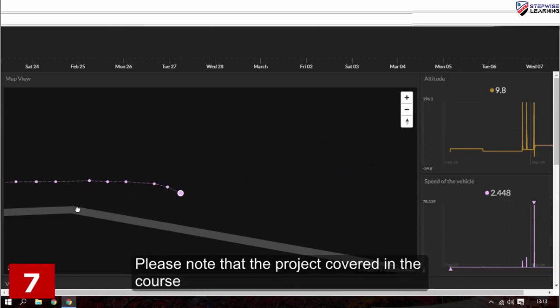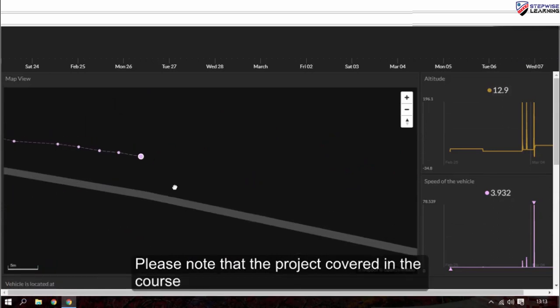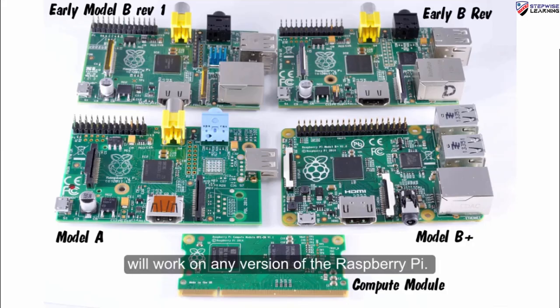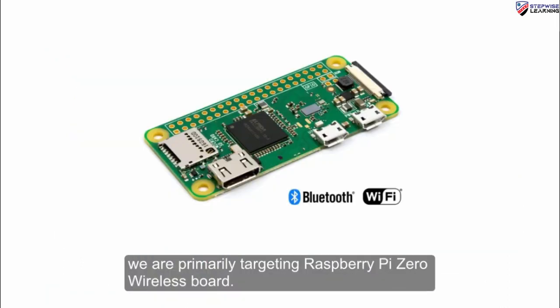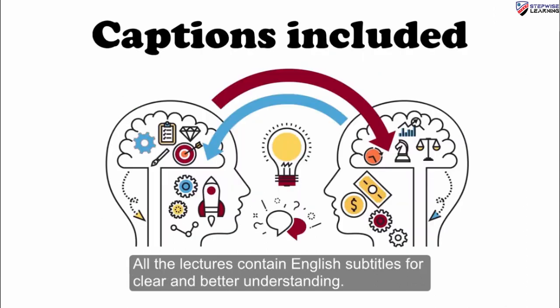Please note that the project covered in the course will work on any version of the Raspberry Pi. Only to keep the project development cost down and to embed the circuit anywhere, we are primarily targeting Raspberry Pi Zero wireless. All the lectures contain English subtitles for clear and better understanding.